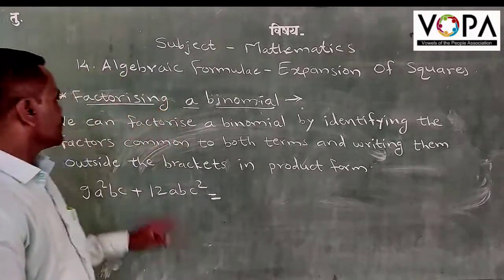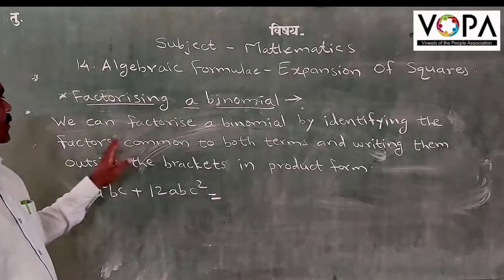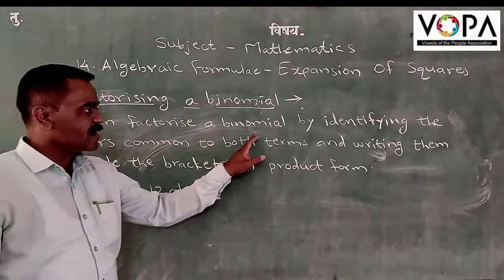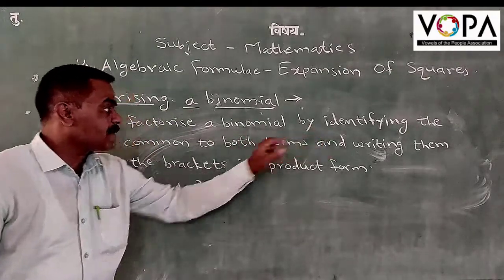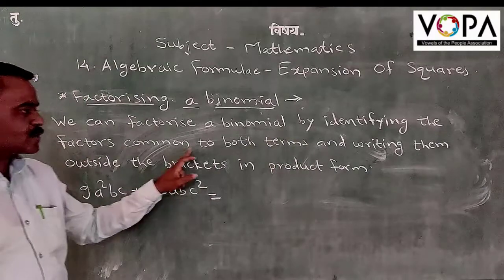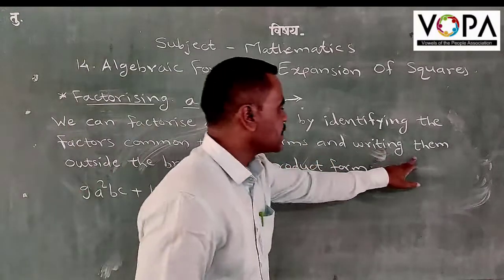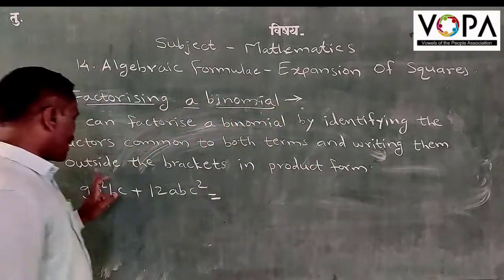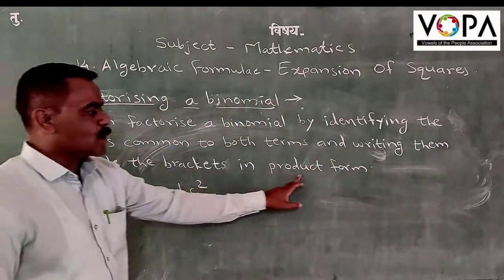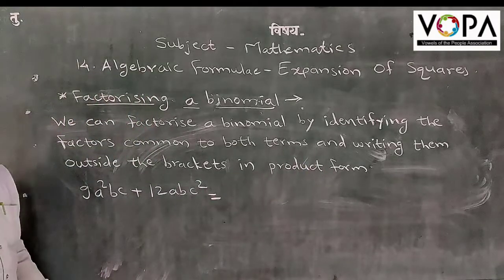Next, factorizing a binomial. We can factorize a binomial by identifying the factors common to both terms and writing them outside the brackets in product form.